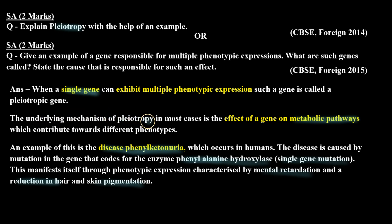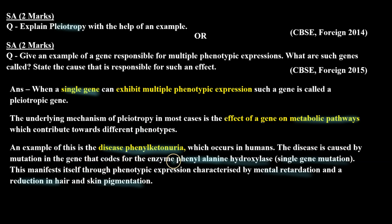The underlying mechanism of pleiotropy in most cases is the effect of a gene on metabolic pathways, which contribute towards different phenotypes. An example of this is the disease phenylketonuria, which occurs in humans. The disease is caused by mutation in the gene that codes for the enzyme phenylalanine hydroxylase — a single gene mutation. This manifests itself through phenotypic expressions characterized by mental retardation and a reduction in hair and skin pigmentation.